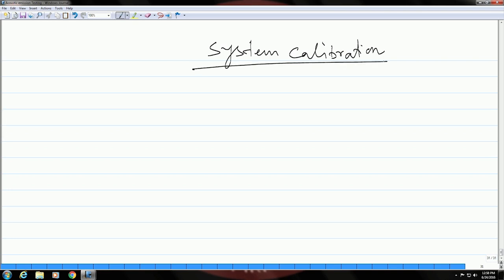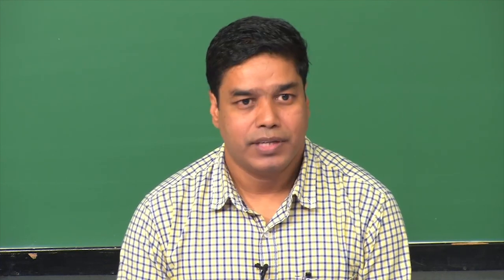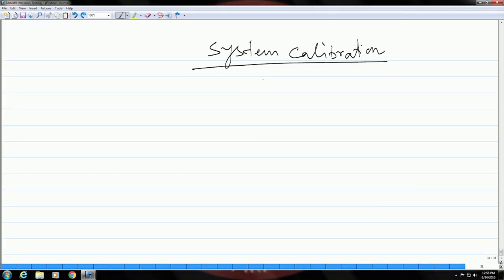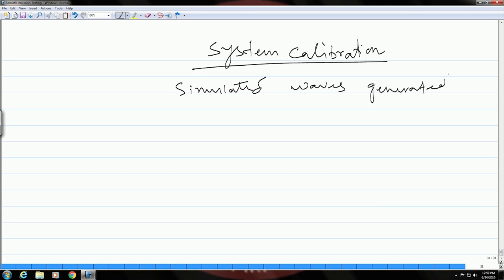In order to calibrate a system, you need to have some reference which could generate a signal that can be used as a defect signal and calibrate the instrument. In this case you need to simulate acoustic waves which come out from defects using a pulse generator which can simulate acoustic emission from actual emission events.